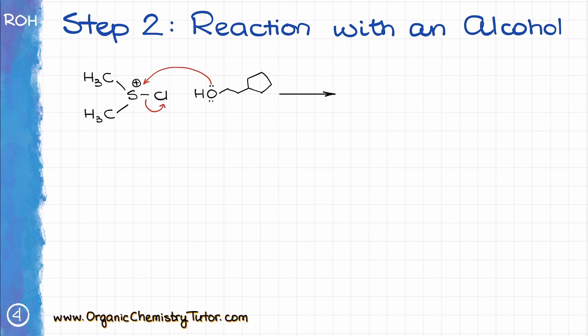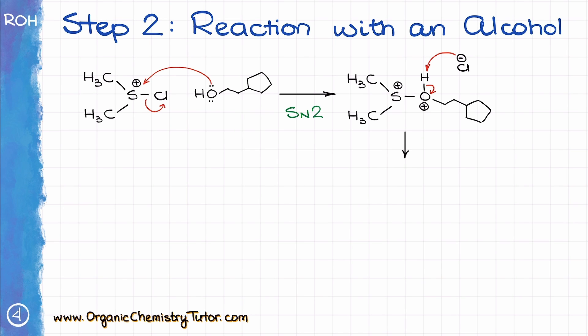The sulfonium ion that we prepared in the first step is now going to rapidly react with the alcohol. This is essentially a simple SN2 reaction where the alcohol comes in and kicks the chlorine out, replacing it. Once we have our intermediate, we are going to deprotonate it with the chloride anion that we just kicked out and that's floating around us, giving the intermediate with an oxygen-sulfur bond, which we are then going to treat with base.